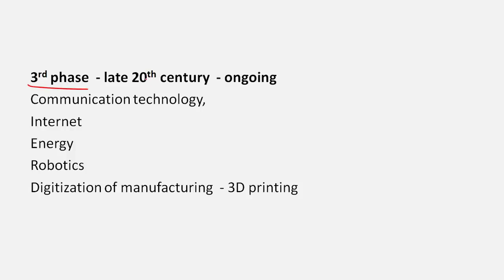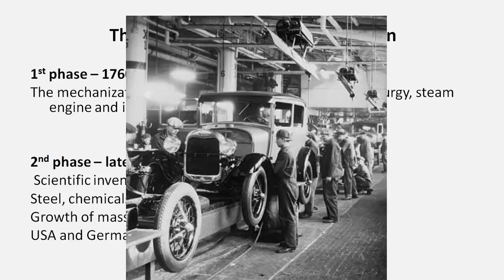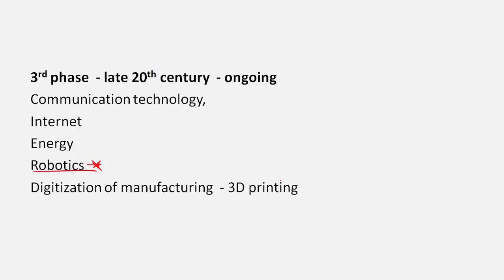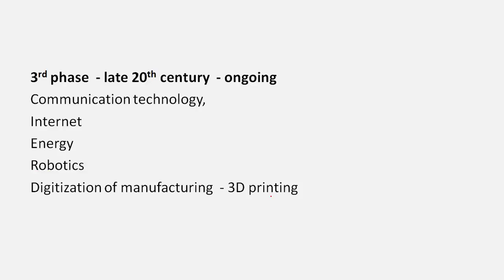The third phase started in the late 20th century and is still ongoing. It is important for communication technology — the internet has revolutionized the world. Clean energy alternatives like solar, hydel, and geothermal are replacing coal. Robotics is now a major aspect: in modern car factories, robot arms fix tires and paint cars, replacing all the human assembly line workers. Digitization of manufacturing through 3D printing means you can start a factory at home. Some writers suggest a fourth phase has started due to artificial intelligence, but for now we are in the third phase.